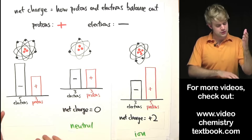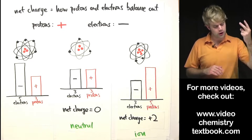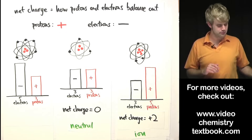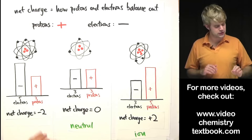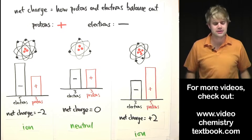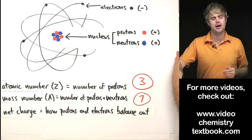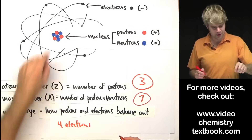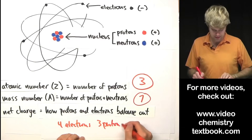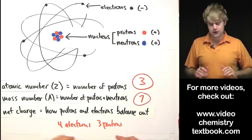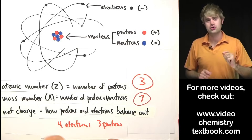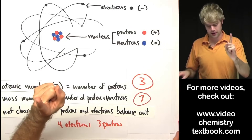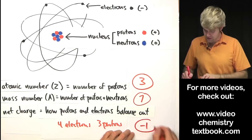So if we have five electrons and three protons, there are two more electrons than protons, giving two negative charges that aren't balanced out by the protons. That means we have a net charge of minus two, and this is also an ion. So what's the net charge for this atom? We have one, two, three, four electrons and one, two, three protons. Since they're different numbers, the protons and electrons aren't going to balance each other out. We have one more electron than proton, so this atom has a net charge of minus one.